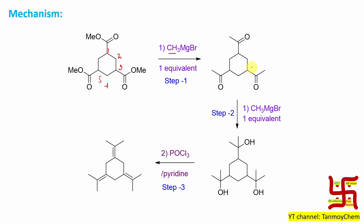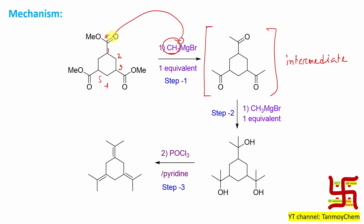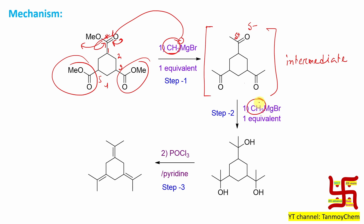If you react the triester with methyl magnesium bromide in the first step, it will result in a ketone — this is the intermediate, you cannot isolate it. This intermediate will react further with a second equivalent of Grignard reagent. Because the ester carbonyl is electron deficient, the Grignard attacks the carbonyl group, it opens up and the leaving group leaves. So three esters react similarly, producing the first product. In the second step, this carbon is delta positive and the methyl group in the Grignard reagent is delta negative, so it will attack and open up, resulting in a tertiary alcohol.